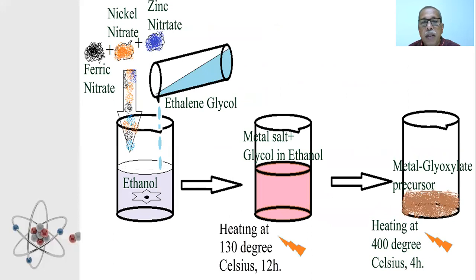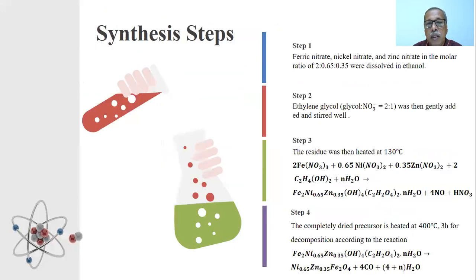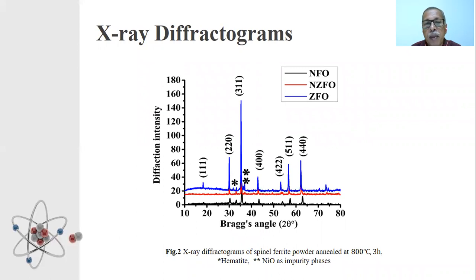This slide shows the synthesis procedure. It is self-explanatory. This gives the reaction followed in this synthesis method. The final end product is a dried precursor which is heated at 400 degrees Celsius for three hours for its decomposition to form the ferrite powder. For better crystallinity, this material is sintered at 800 degrees Celsius and allowed to cool to normal temperature. The final powder is subject to different types of analysis.